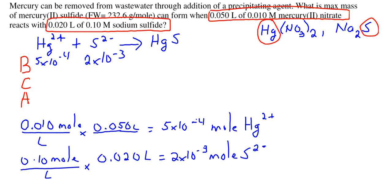So now I've calculated the number of moles that we have of each of the reagents by multiplying their respective molarity times the volume in units. So we have 5 times 10 to the minus 4 moles of mercury and 2 times 10 to the minus 3 moles of sulfide ion.